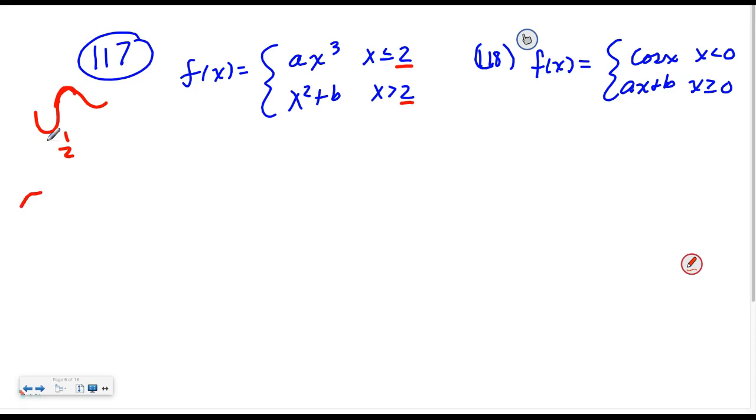It also must not have any cusps there. So for us to make that happen with our A and B, we branch off and we do two things.